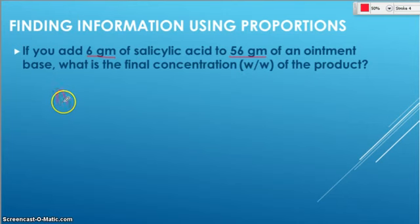We're going to put the active ingredient over the total. So active over total times 100. In this case, the active ingredient is that salicylic acid. So the active ingredient is 6. So we have 6 grams of salicylic acid. And what did we do with it? We added it to 56 grams of base. So if we added it to, that means we now have a total of 62 grams. So our total is 62.